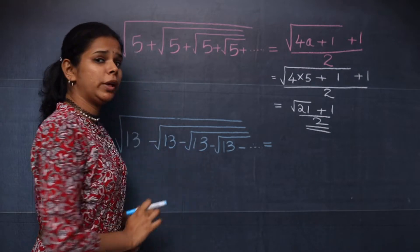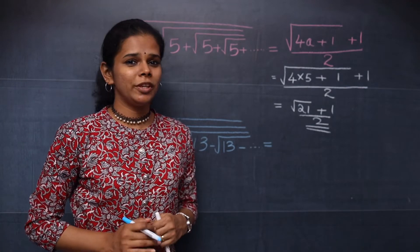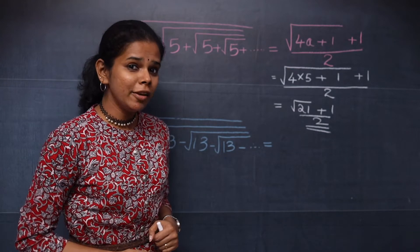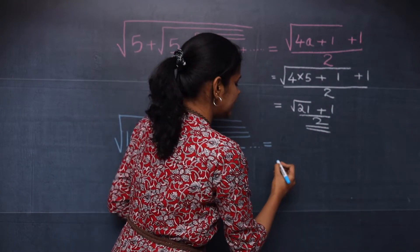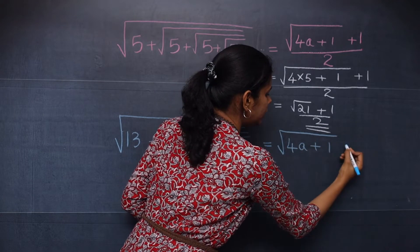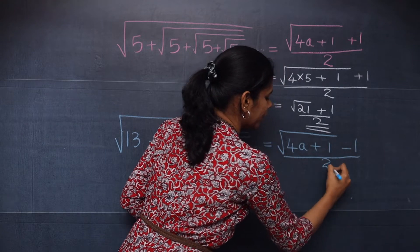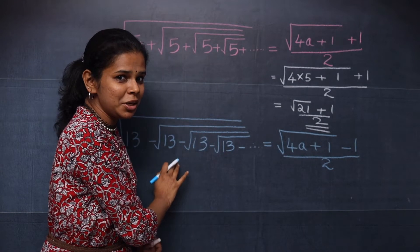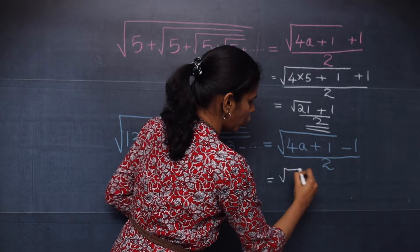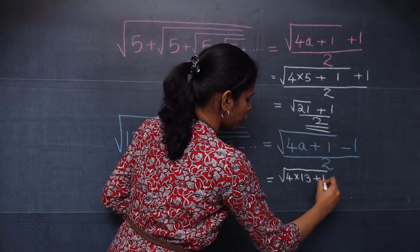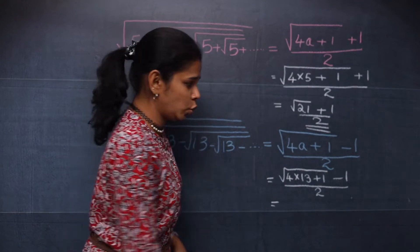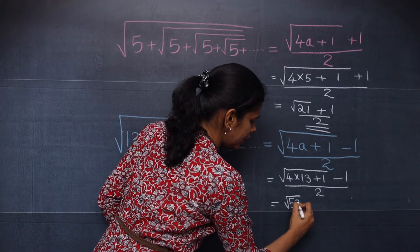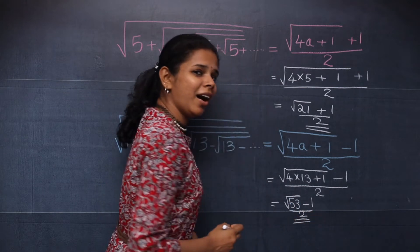In the next question, when you take the factors of 13, you also can't get a pair whose difference gives 1. In that case you use a similar formula but with one difference — instead of plus, it will be minus: (√(4a+1) − 1) / 2. Here a=13, so substituting: (√(4×13+1) − 1) / 2 = (√(52+1) − 1) / 2 = (√53 − 1) / 2, which is your answer.